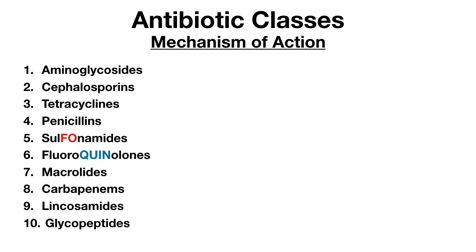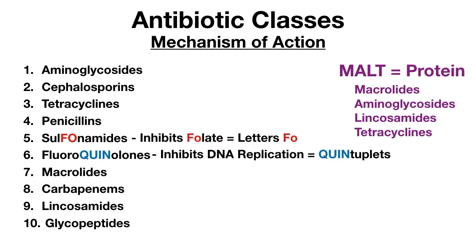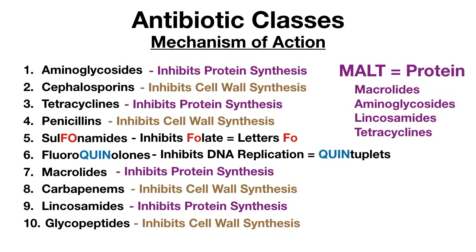The last trick helps you remember the mechanism of action. For sulfonamides, use the 'FO' in sulfonamides to remember 'FO' in folate — this class inhibits folate synthesis. For fluoroquinolones, think of identical quintuplets — take the 'quin' in fluoroquinolones and the 'quin' in quintuplets to remember they inhibit DNA replication. For protein synthesis inhibitors, use the mnemonic MALT — macrolides, aminoglycosides, lincosamides, and tetracyclines. Finally, through process of elimination, the remaining four classes — cephalosporins, penicillins, carbapenems, and glycopeptides — inhibit cell wall synthesis.